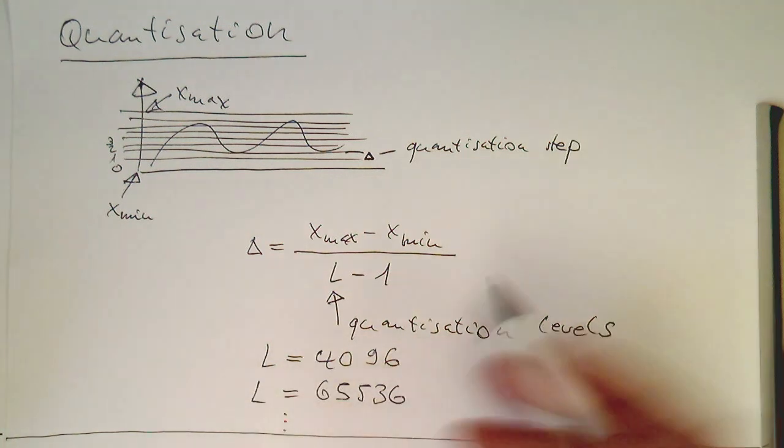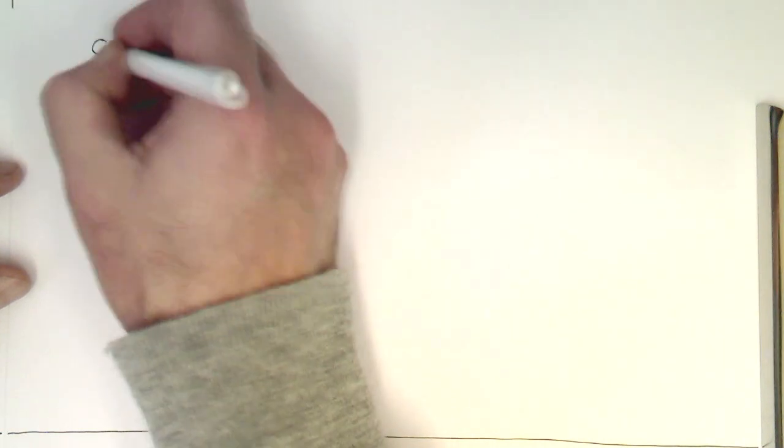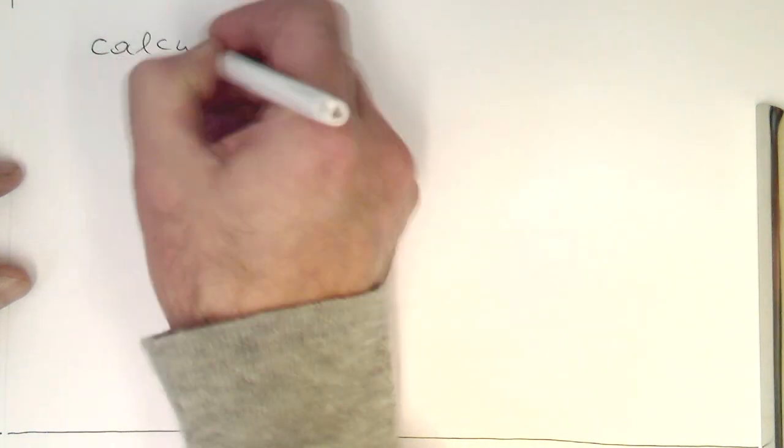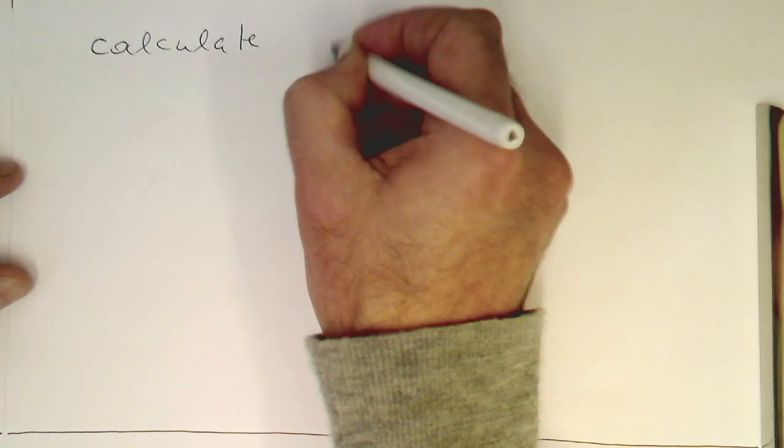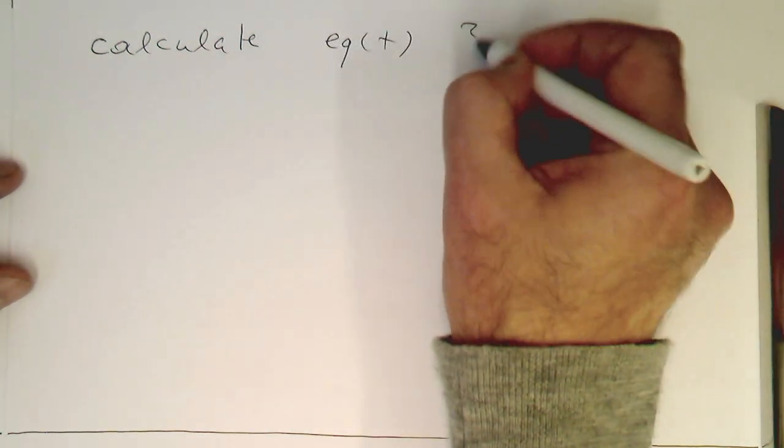These are classical quantization steps. So now what we do in the next step is just ask what is the error? Let's calculate this quantization error.